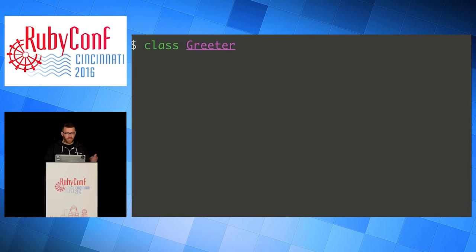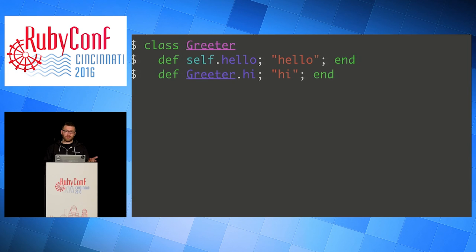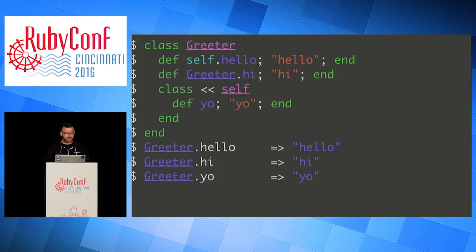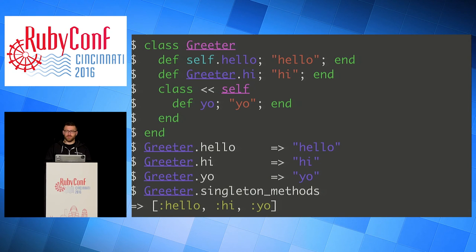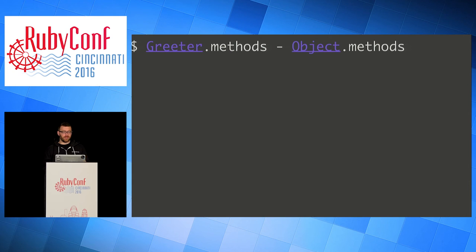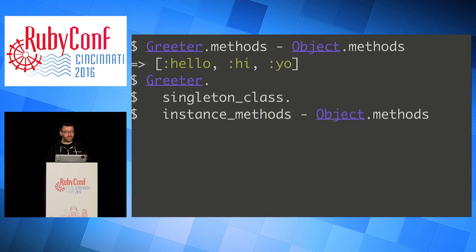We have a greeter class. You can do self.hello, which is what we mostly see for class methods. You can also define it on the class and do greeter.hi. And if you've ever seen 'class << self', this is actually a way to open up the singleton class and put methods on it — so I define 'yo' without needing self or the class name. We call hello, hi, and yo. Looking at the singleton_methods on greeter, we see the three we defined. These are all class methods, but they're instance methods on the singleton class. Another way to look at it: take greeter's methods, subtract away all the methods on object, or get the singleton class on greeter and look at the instance methods on that, removing the class methods on object.